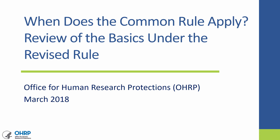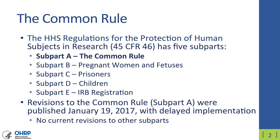The Common Rule is part of the Federal Policy for the Protection of Human Subjects, found in the Code of Federal Regulations at 45 CFR 46, and it has five subparts. Subpart A is the Common Rule. Subparts B, C, and D provide additional protections for certain vulnerable populations. Subpart E provides requirements about IRB registration.